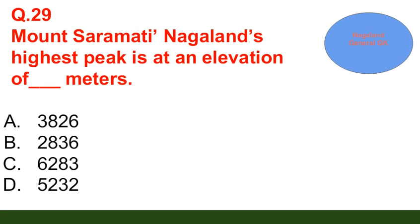Question number 29: Mount Saramati, Nagaland's highest peak, is at an elevation of how many meters? Option A: 3,826; option B: 2,836; option C: 6,283; option D: 5,232. The correct answer is option A — 3,826 meters.